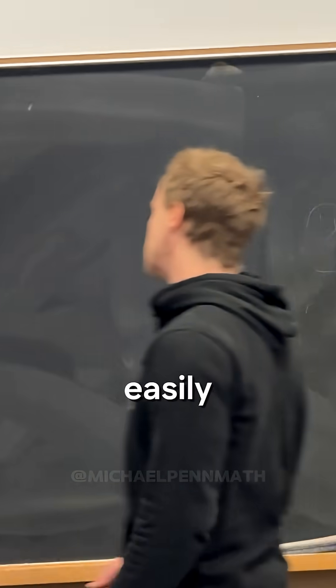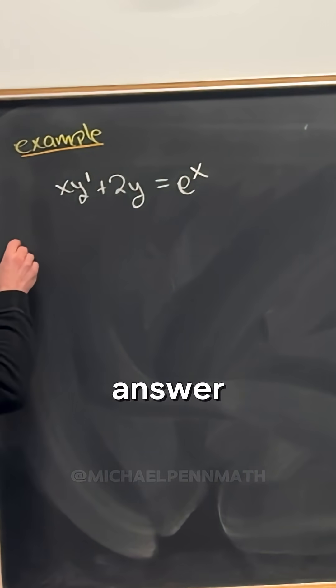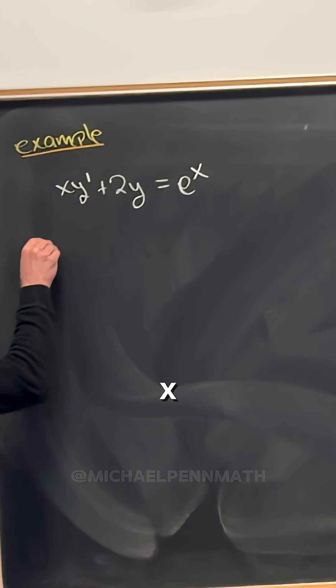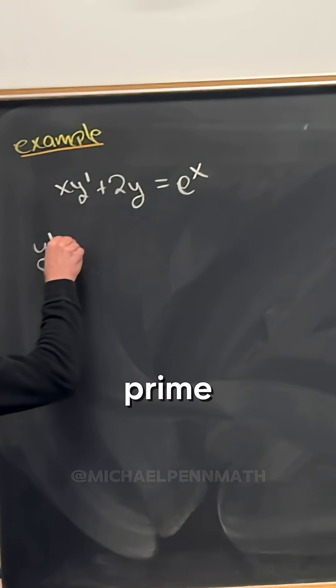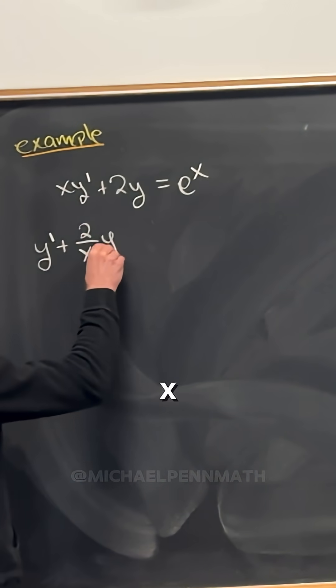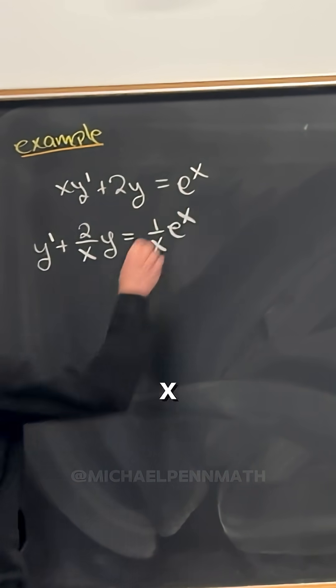But that being said, it can easily be put into the standard form where we can write the answer down by dividing the whole thing by x, leaving us with y prime plus 2 over x times y equals 1 over x times e to the x.